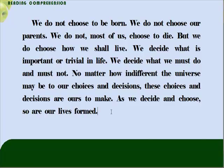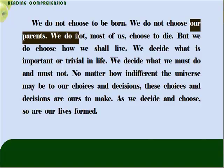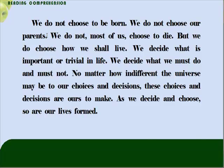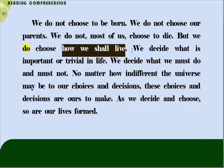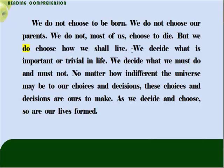우리는 태어나는 것을 선택하지 않는다. 우리는 우리의 부모를 선택하지 않는다. 우리 대부분은 죽는 것을 선택하지 않는다. 'But we do choose how we shall live.' 'do'가 왜 쓰였을까요? 동사를 강조하는 역할을 하고 있습니다. 하지만 우리는 분명히 선택한다, 'how we shall live', 우리가 어떻게 살 것인가를. 'Trivial'은 사소한이라고 하는 뜻입니다. 우리는 인생에서 무엇이 중요하고 무엇이 사소한 건지를 결정한다. 우리는 우리가 무엇을 해야 할지, 그리고 무엇을 해서는 안 될지를 결정한다.